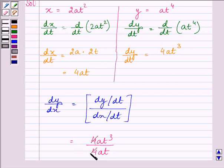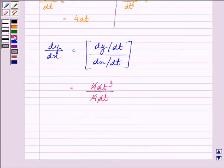4 will get cancelled out, a will get cancelled out, and we have t raised to the power 3 minus 1, which equals t².